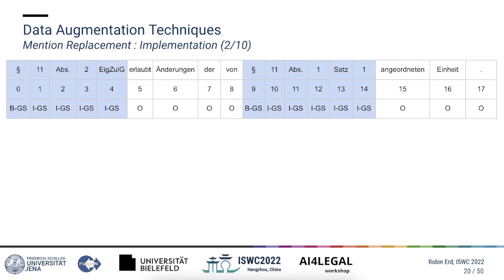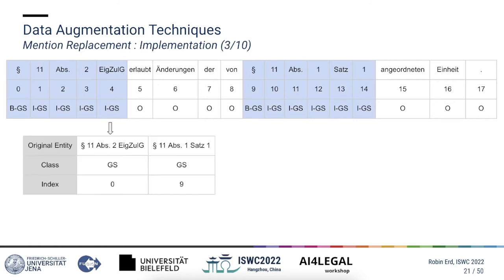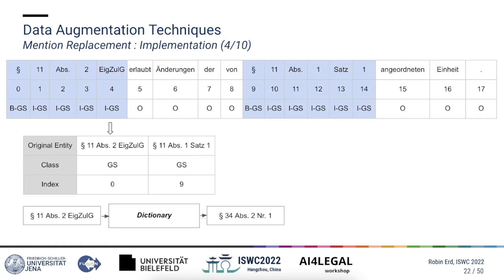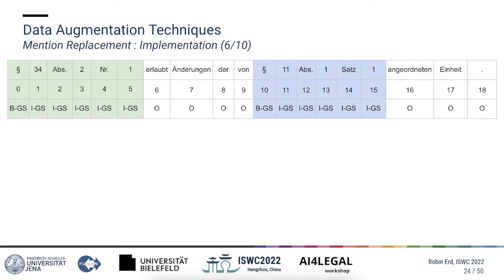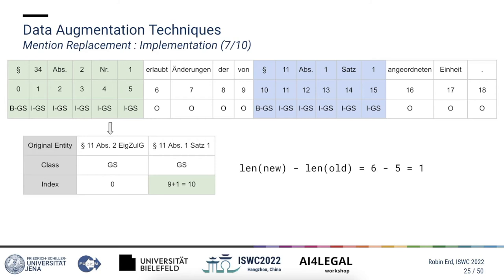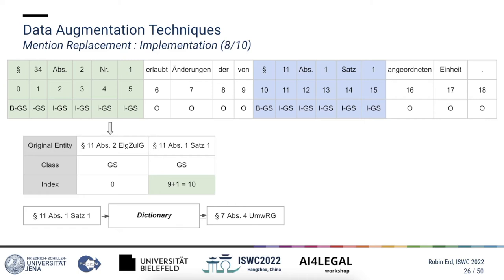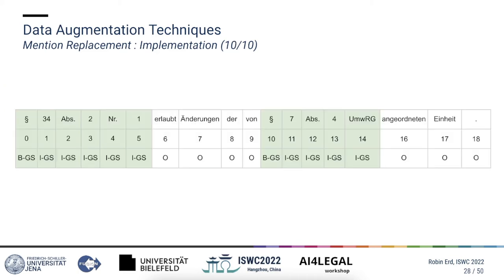This sentence contains two entities highlighted in blue which will both be replaced. First we extract the entity information from the sentence including the start index and class. We then retrieve a replacement for the first entity from the dictionary, tokenize this replacement, and insert it in place of the old entity. Then we repeat the process for the other entity. Before we do that we have to update the information about the positions of the entities, because the replacement entity is a bit longer than the original. This offset can be calculated by subtracting the length of the original token from the length of the replacement token — in this case the offset is 1. After doing that the replacement for the other entity can be retrieved, tokenized, and inserted in place of the original entity, resulting in the final sentence.